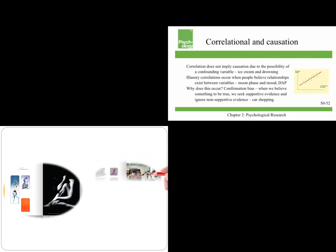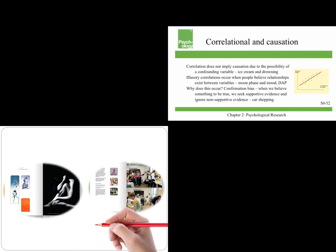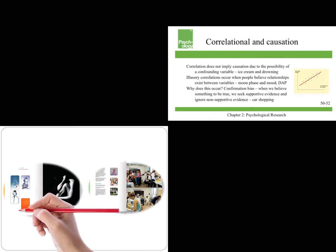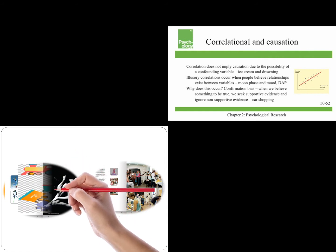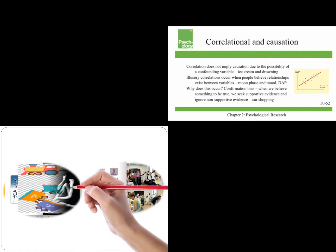Correlation does not imply causation due to the possibility of a confounding variable. For example, there is a relationship, a positive correlation between ice cream and drowning. The more ice cream that's sold, the more people drown. Now that's not because ice cream causes people to drown. It's because both are related to summertime. More people are swimming, more people are eating ice cream.